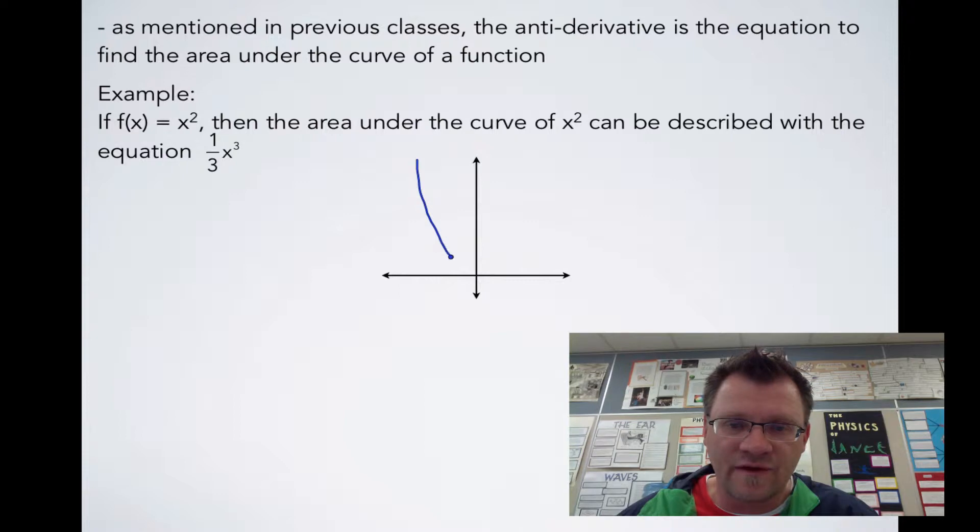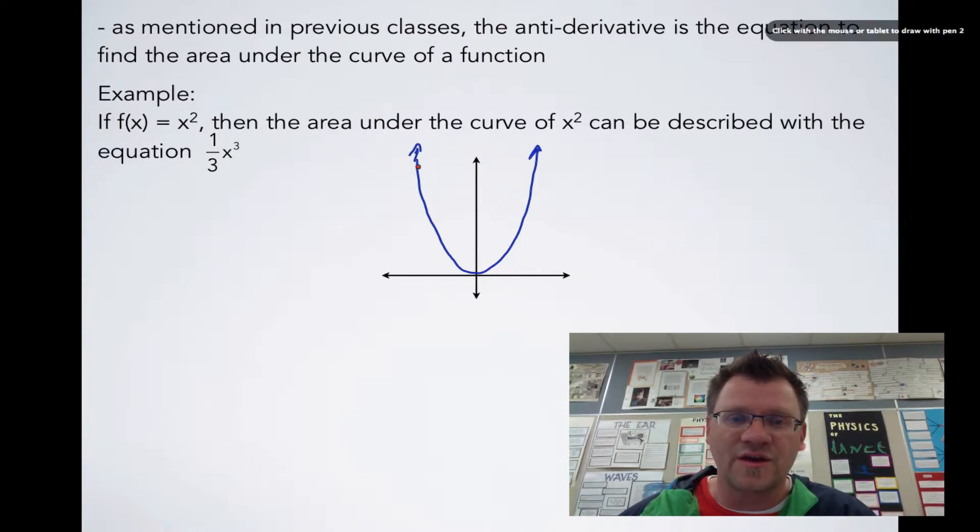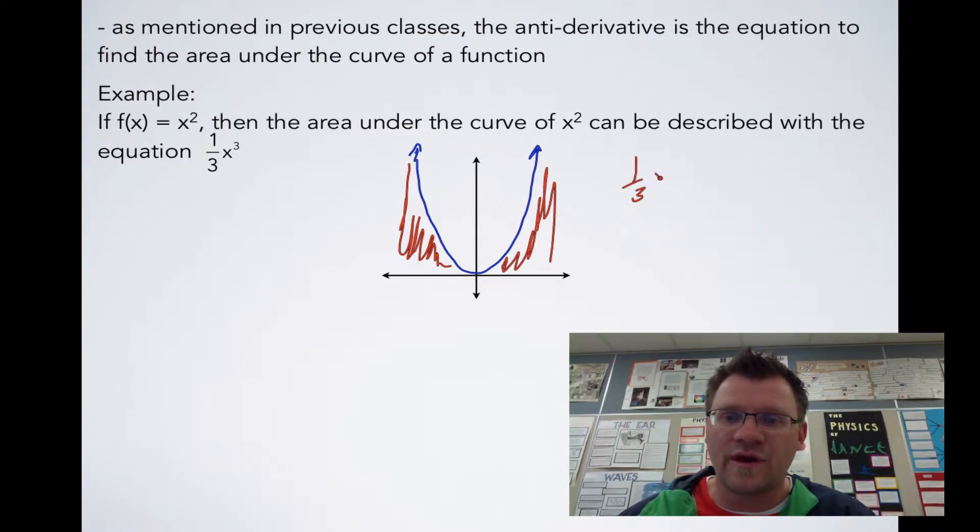So if we were to graph that, if this is x² (just a normal parabola), then the area underneath the curve, which means between the curve and the x-axis, is given by the equation 1/3 x³, depending on what your x value is.